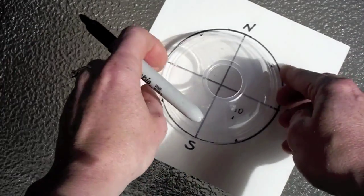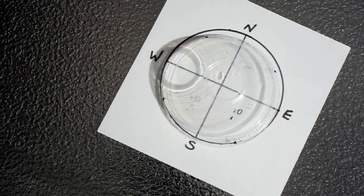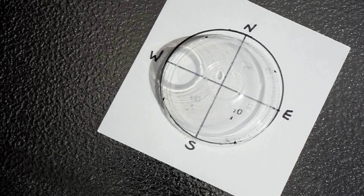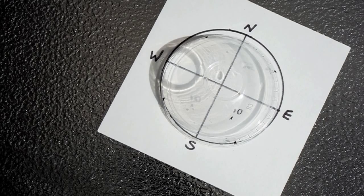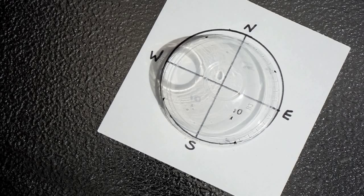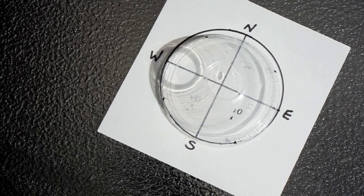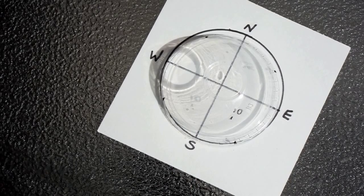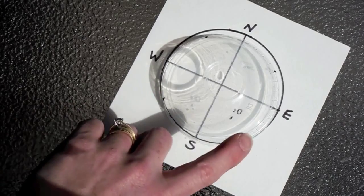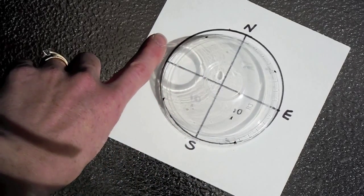When I do this with students we do this every hour during the day usually with small groups of kids so that everyone in the class had a chance to collect data. Then at the end of the day we can look at what the data showed us. If the earth was staying still the shadow would be in the same location every hour, but when they look at their data over a whole day they will notice that each hour the shadow moved.